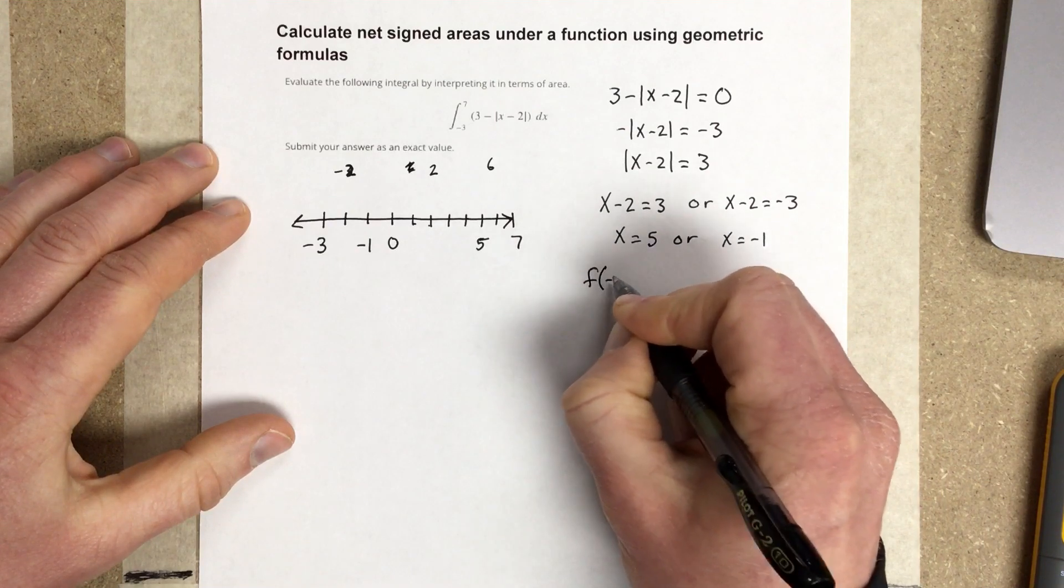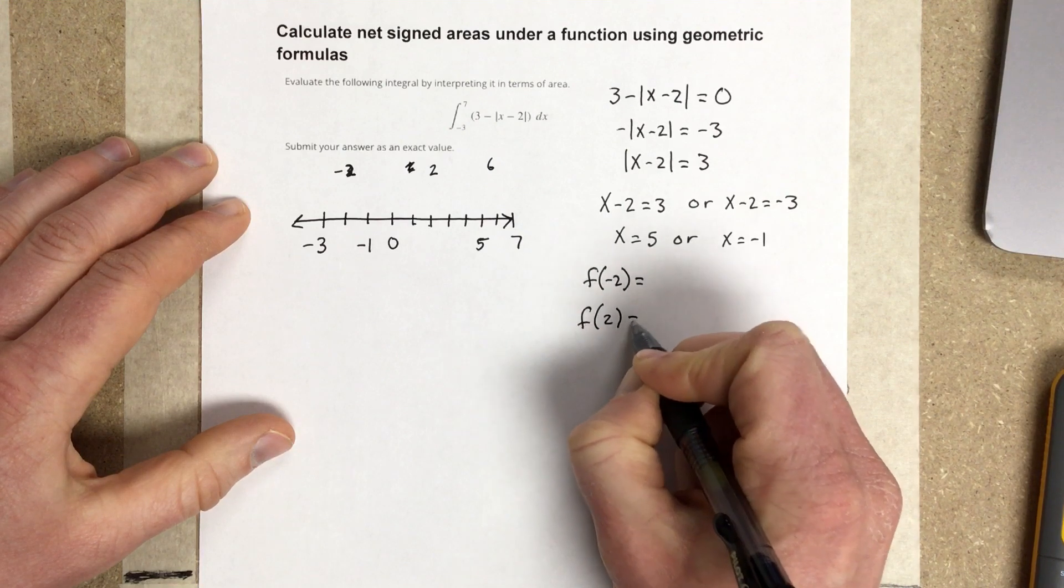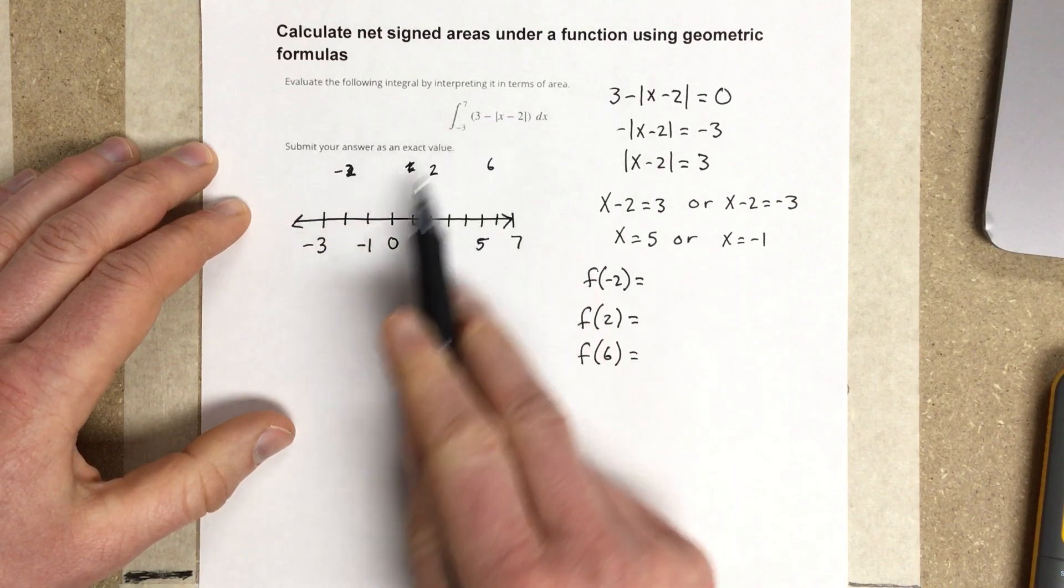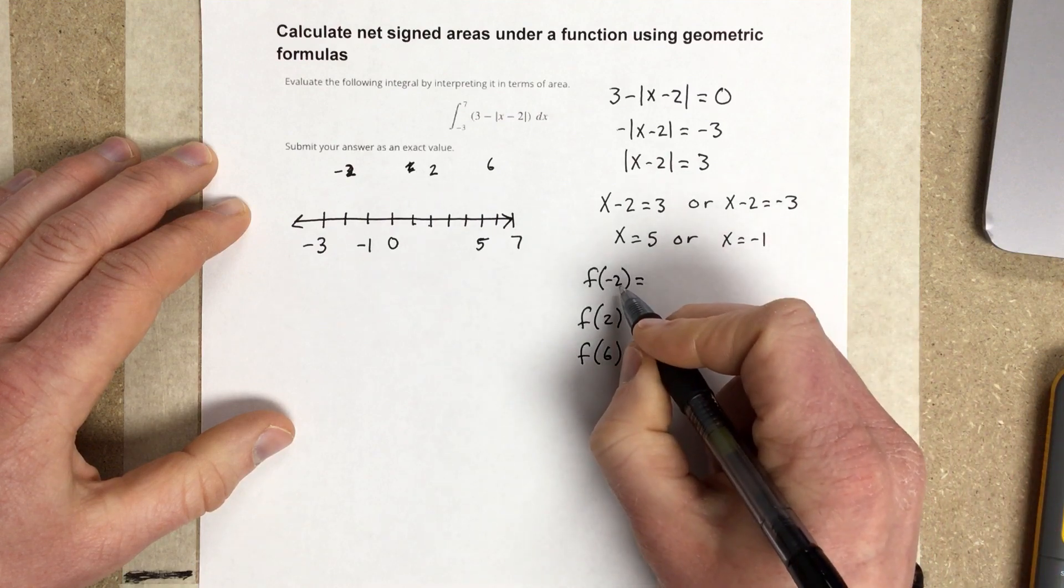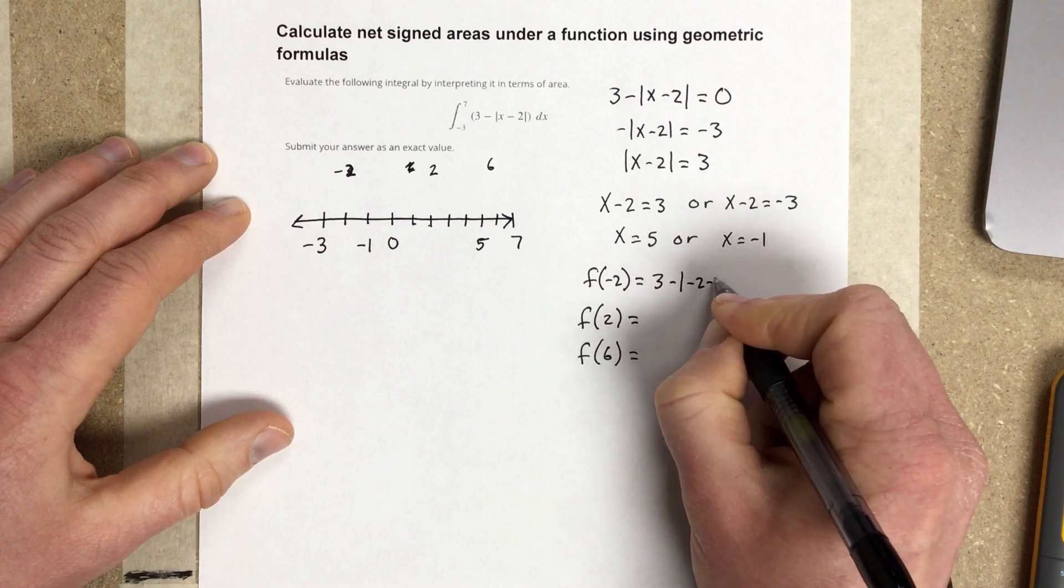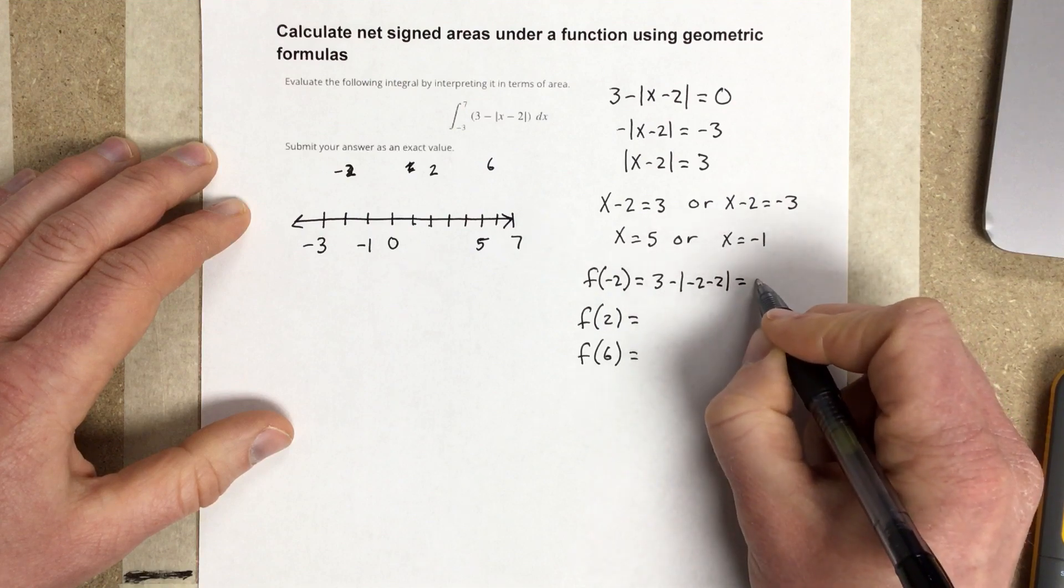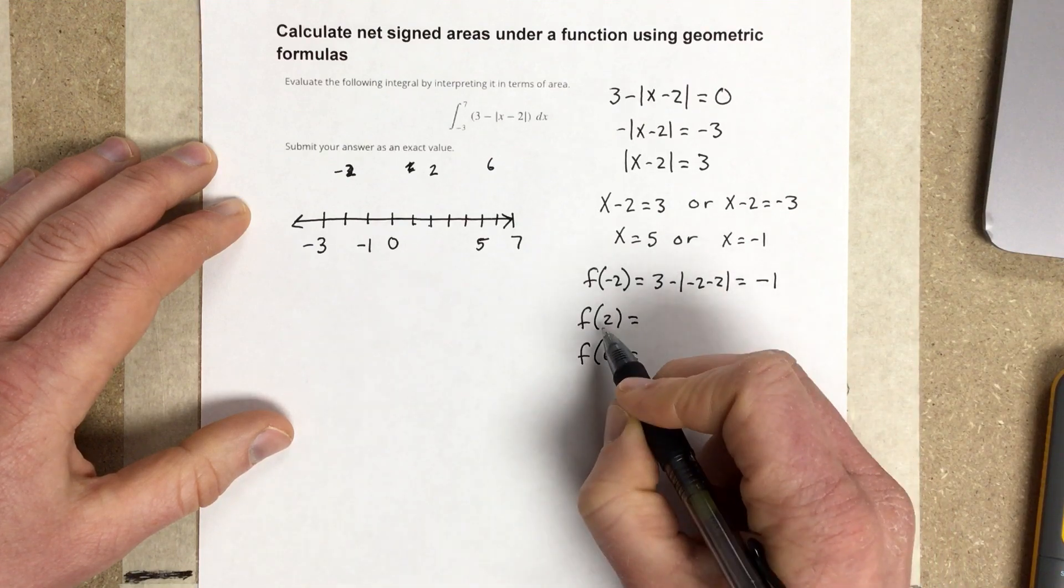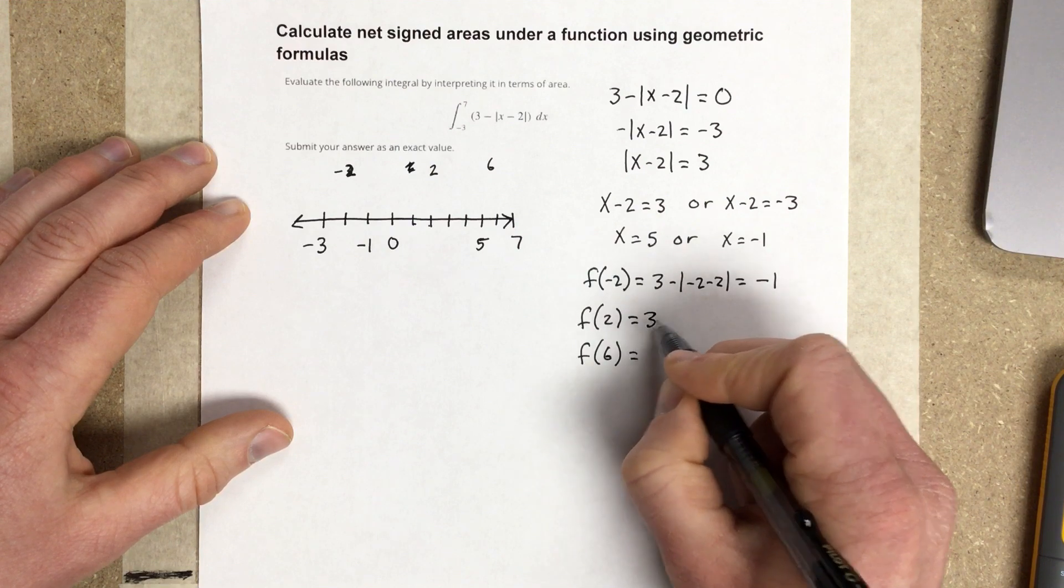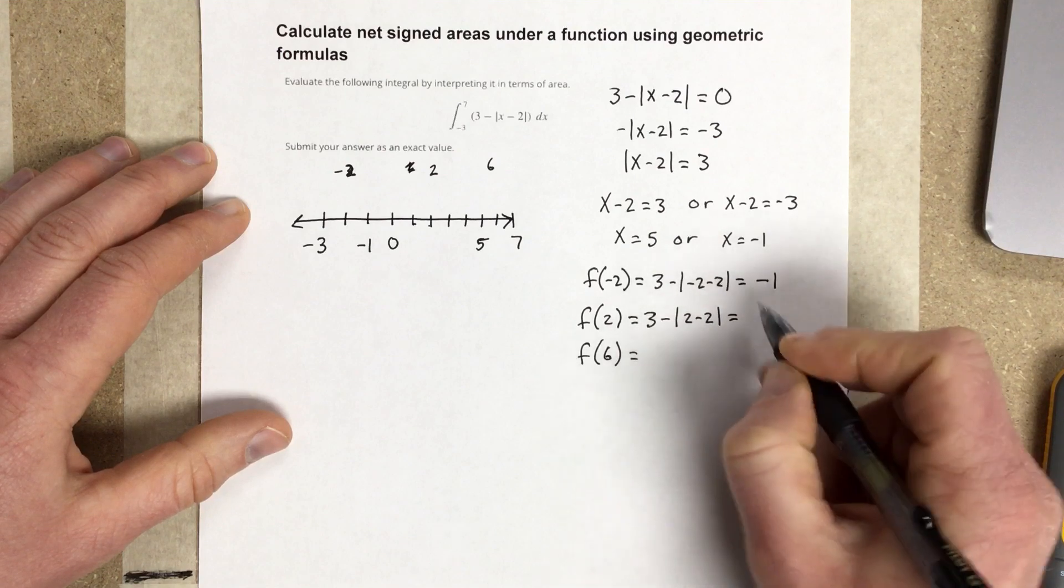And, that's going to help tell me what my height is. So, I'm going to say that f of negative 2 is equal to something. I'm going to do f of 2, and I'm going to do f of 6. Because, remember, we're doing an absolute value function here. So, this is creating triangles in here. So, f of negative 2 is going to equal 3 minus absolute value of negative 2 minus 2. When I do the absolute value of negative 4, I get 4. So, 3 minus 4 is negative 1. And then, if I do 2 here, f of 2, I'd have 3 minus absolute value of 2 minus 2. So, I get 0 in here. So, I just end up with 3.